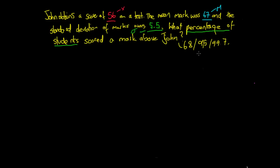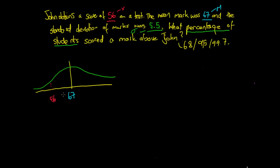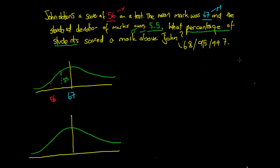We want to work out what percentage of students scored a mark above John. We have our regular curve with a mean mark of 67, and John is all the way to the left at 56 — well below the average. Our standard deviation is 5.5. The first thing we need to do is standardize John's mark, which tells us the number of standard deviations his mark is away from the mean.